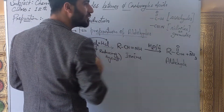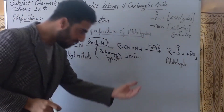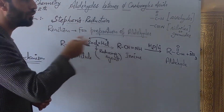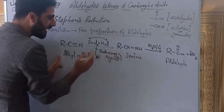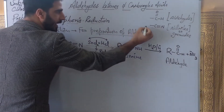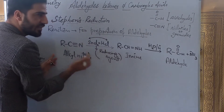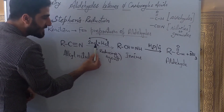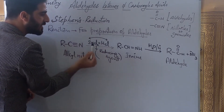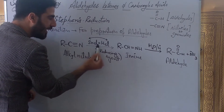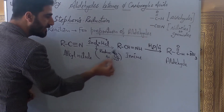If we want to prepare aldehydes, we use nitriles as the starting material. In Stephen's reduction, alkyl nitriles — R-C≡N — are treated with SnCl₂ and hydrochloric acid. This combination is called the Stephen's reagent. Remember this point: SnCl₂ acts as a reducing agent. It reduces the substrate, and in doing so, it is itself oxidized.